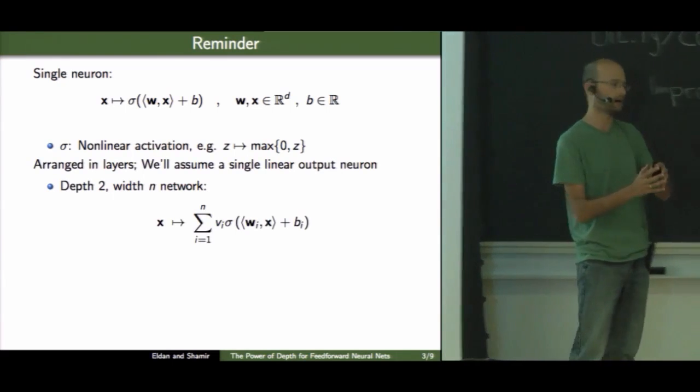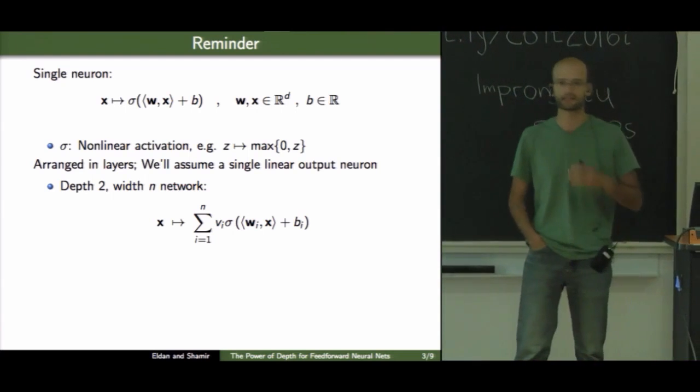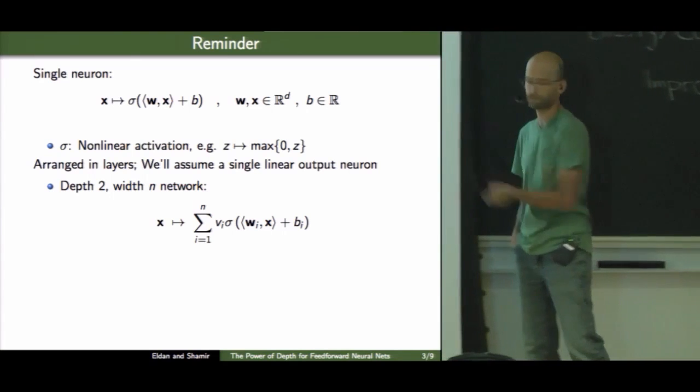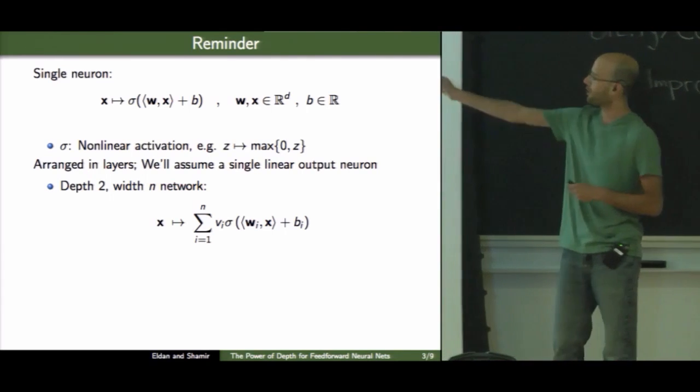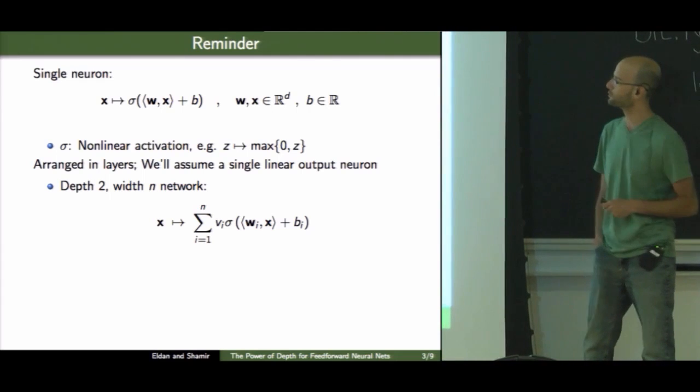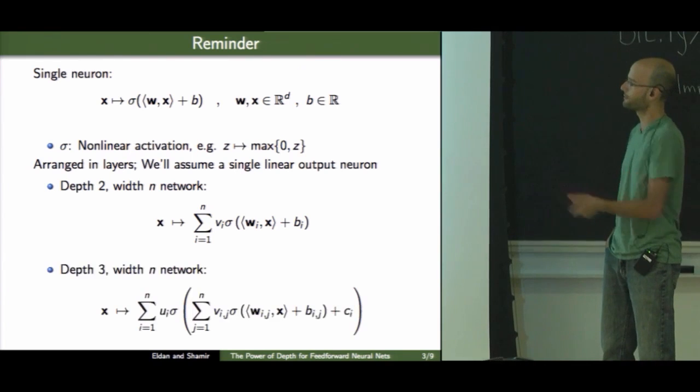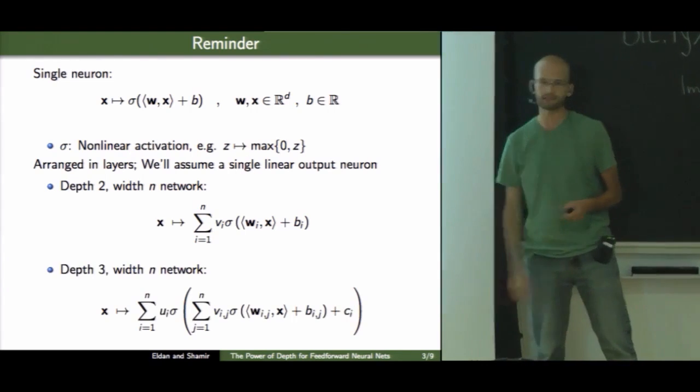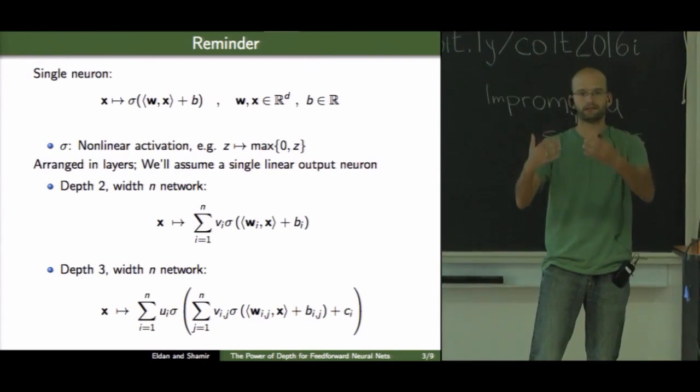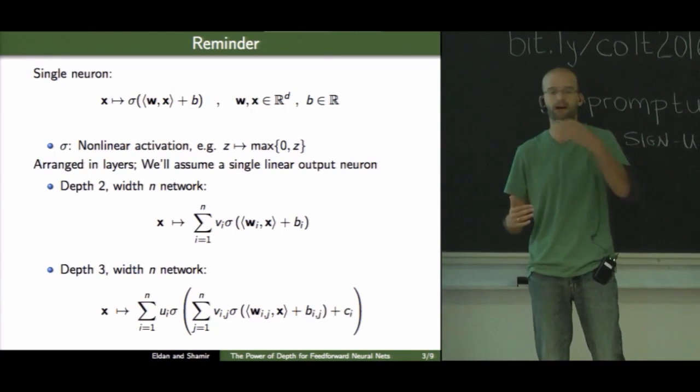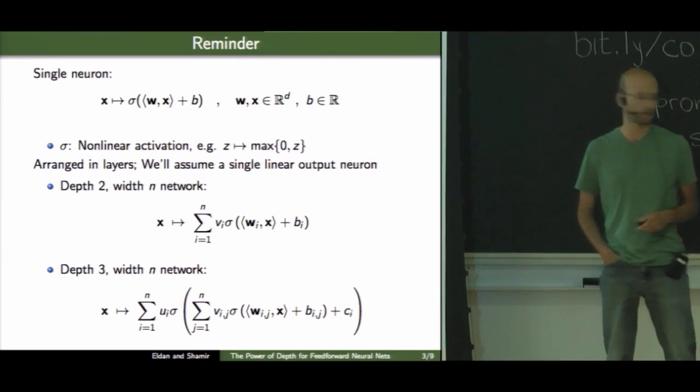And you stack many of these neurons in layers. So for instance, a depth two, a two-layer network, can be written mathematically in this way. It's basically a linear combination of neurons, each with its own weight vector w_i and maybe a bias term b_i. A depth three network would look like this. We have one layer of neurons, then we push their output through another layer of neurons. So this is the basic mathematical structure.